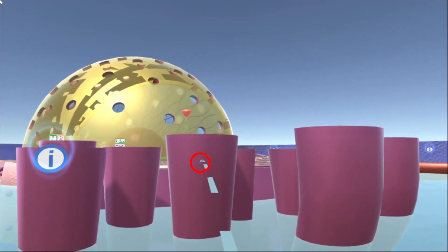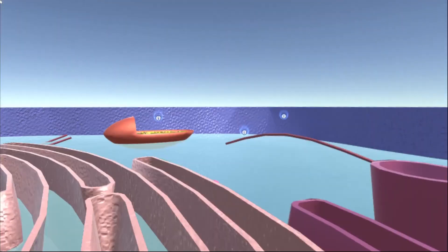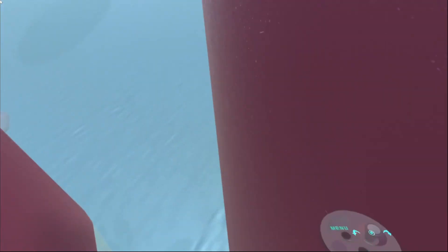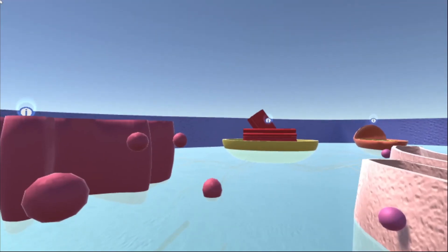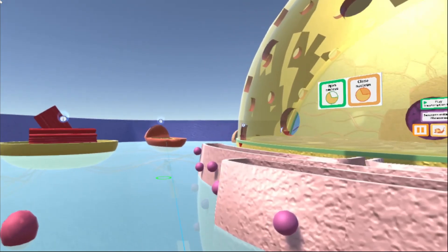So it'll give us that labeled diagram as well as a brief description of that organelle and its functions within the cell. Another cool thing is I can actually jump up on top of any of these organelles. Get up nice and close to them and look at all their details.